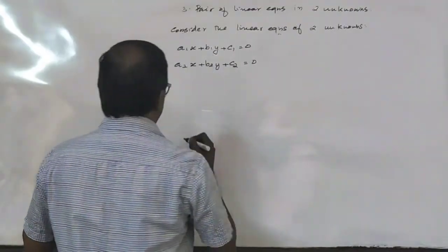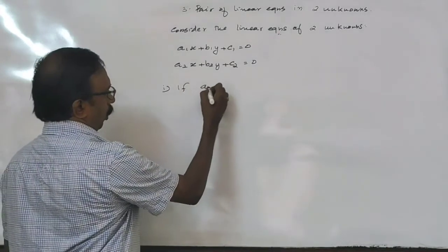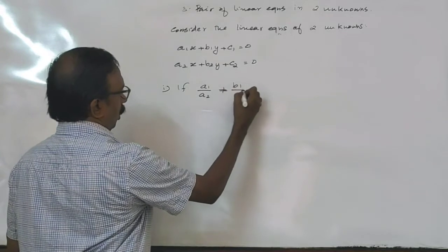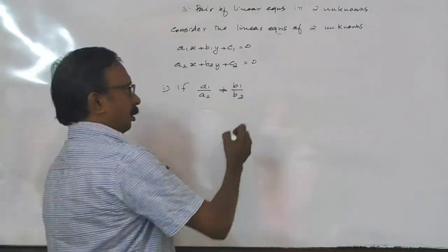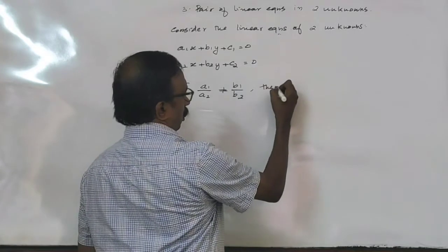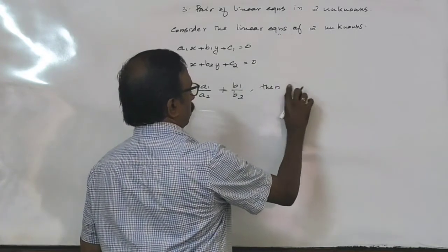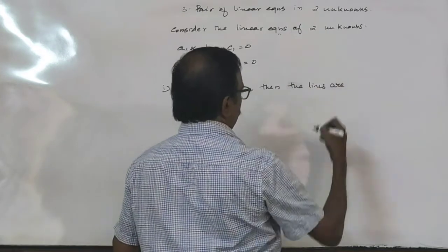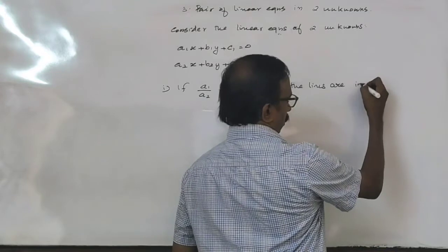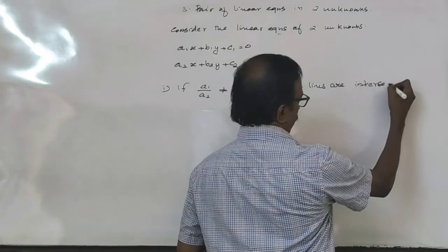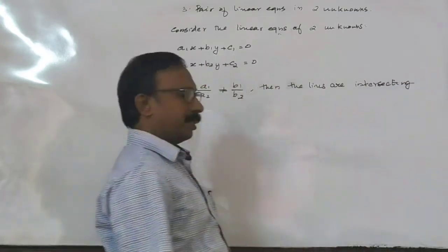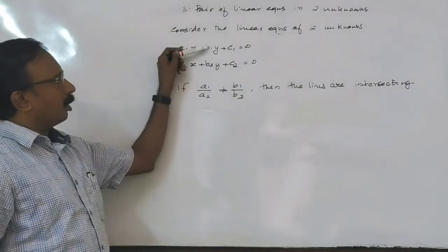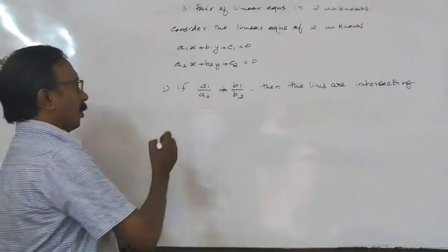If a1 by a2 is not equal to b1 by b2, then the lines are intersecting. The condition for intersecting lines is a1 by a2 is not equal to b1 by b2.